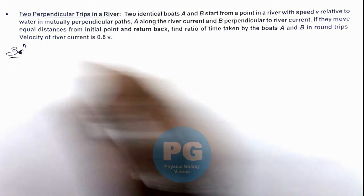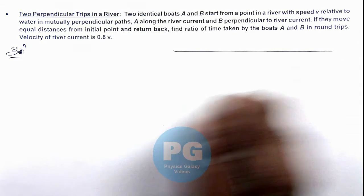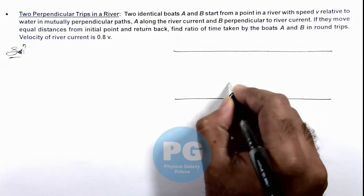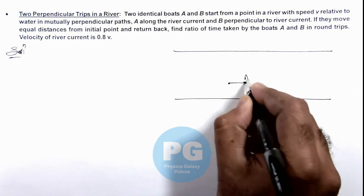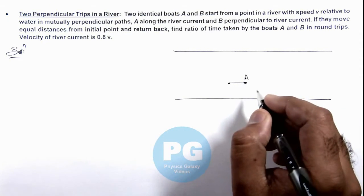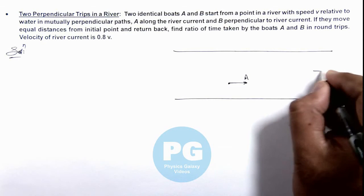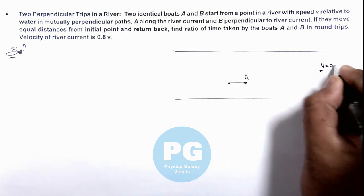So here if we analyze the situation, say if this is the river, and say a boat A is moving along the river current. And the speed of A here we can directly write if river current speed is u which is given to us as 0.8v, where v is the boat speed with respect to river.